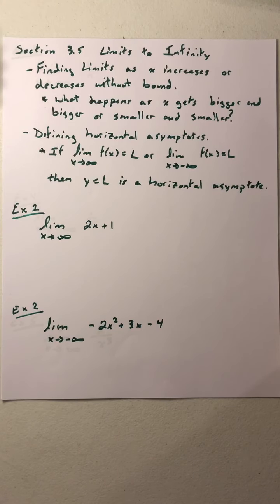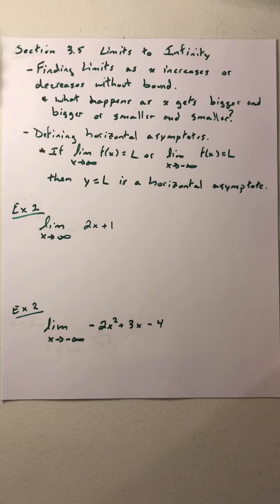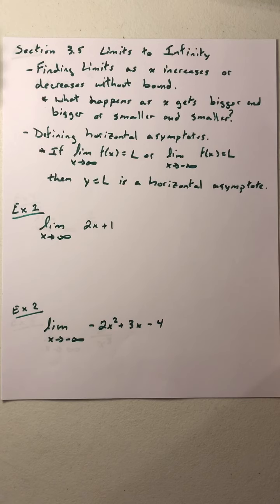Welcome back. Today we're going to focus on section 3.5, which is limits to infinity. Limits to infinity are going to be talking about what happens as x increases or decreases without bound — what happens as x gets larger and larger going to positive infinity, or what's happening as x gets smaller and smaller going to negative infinity. This will allow us to define horizontal asymptotes.